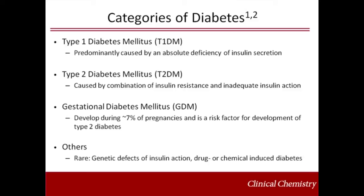Patients with type 2 diabetes, which account for approximately 90 to 95 percent of those with diabetes, have both insulin resistance and inadequate insulin action. Gestational diabetes mellitus, which resembles type 2 diabetes more than type 1, develops during approximately 7 percent of pregnancies and usually remits after delivery, and is a risk factor for the development of type 2 diabetes later in life.